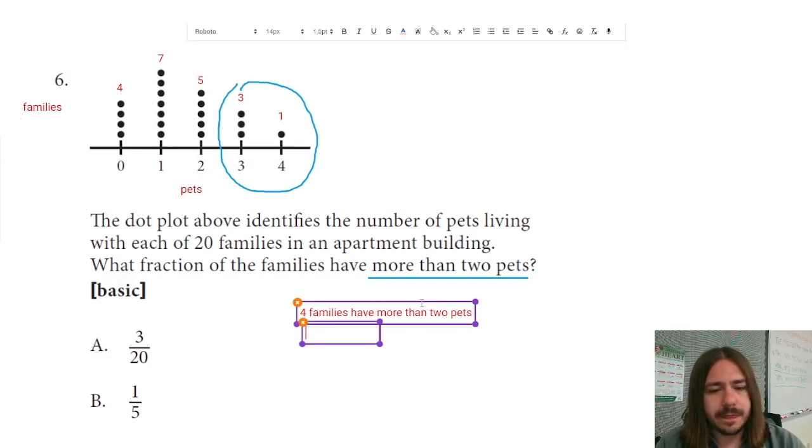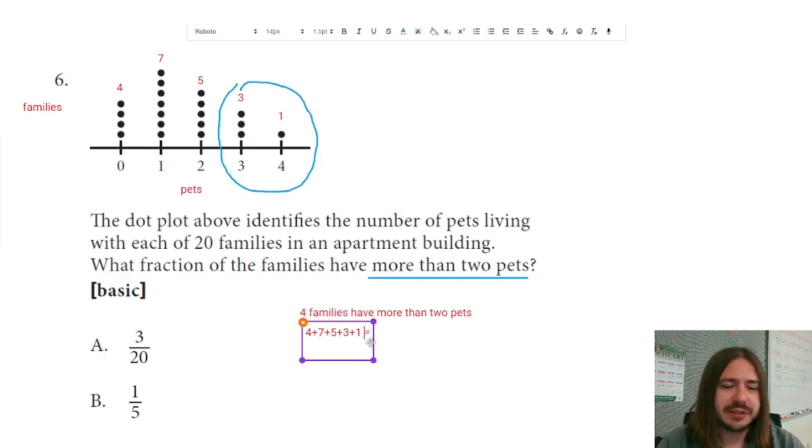So we've got four plus seven plus five plus three plus one. And let's see, what would that be? That'd be four and seven is 11, plus five would be 16, 17, 18, 19, 20. Oh, you know what? They told us 20 families. I didn't have to count that up. Sorry about that. But yeah, there's a total of 20 families. At least we have it affirmed. So 20 families total.